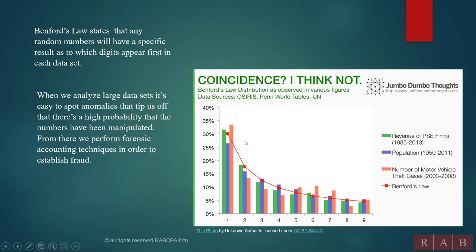For example, here's what it should look like, Benford's Law, based on Benford's Law. But now you look at these here, revenue per PSE firms, population, motor vehicle theft cases, they're not really in line, so what that's telling me is this data is probably manipulated in some way. Something's wrong with the population count, something's wrong with the number of motor vehicle theft cases. Maybe some of these aren't thefts.